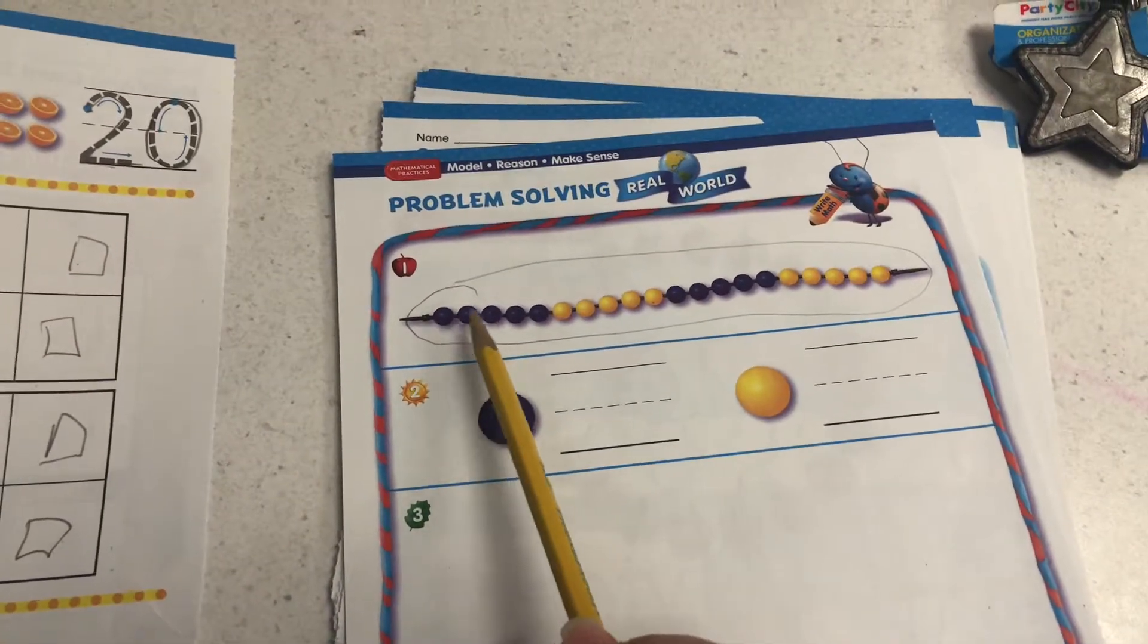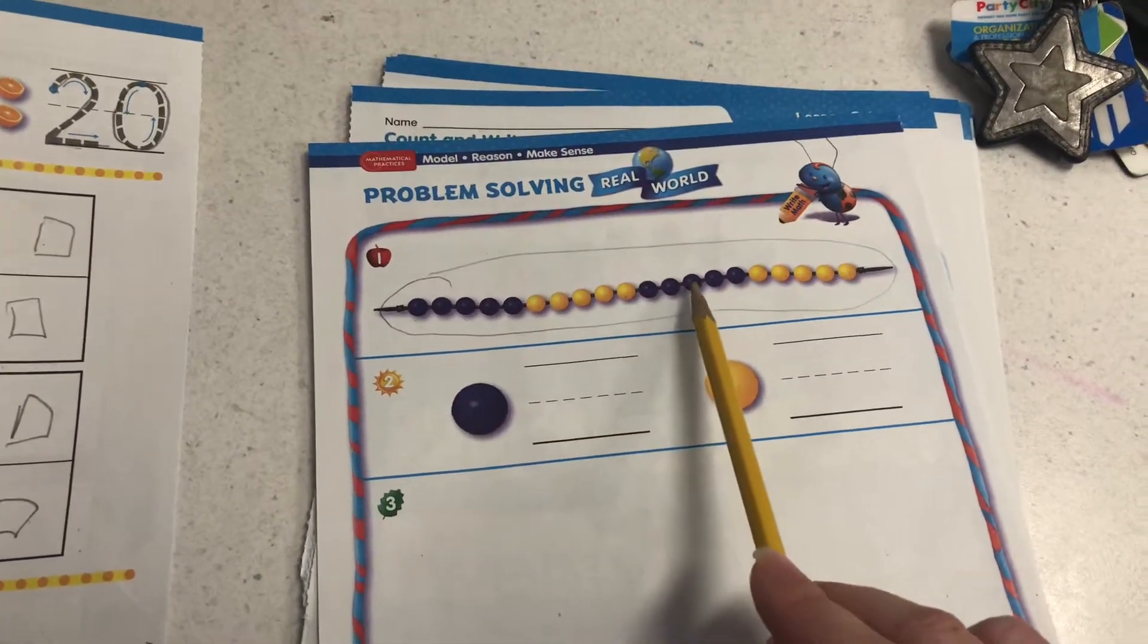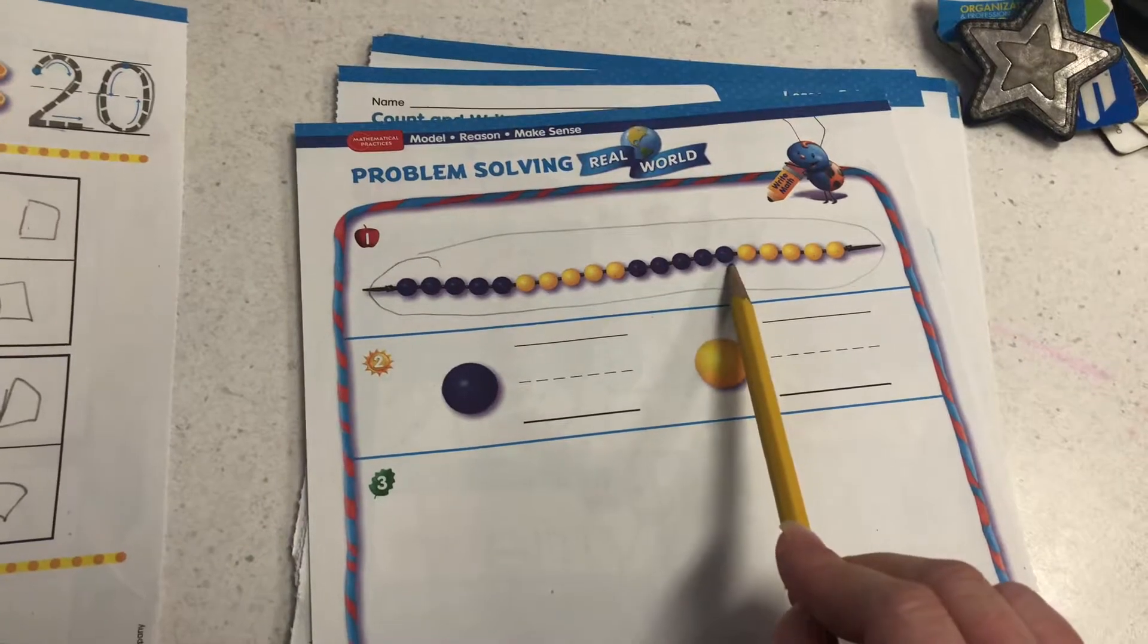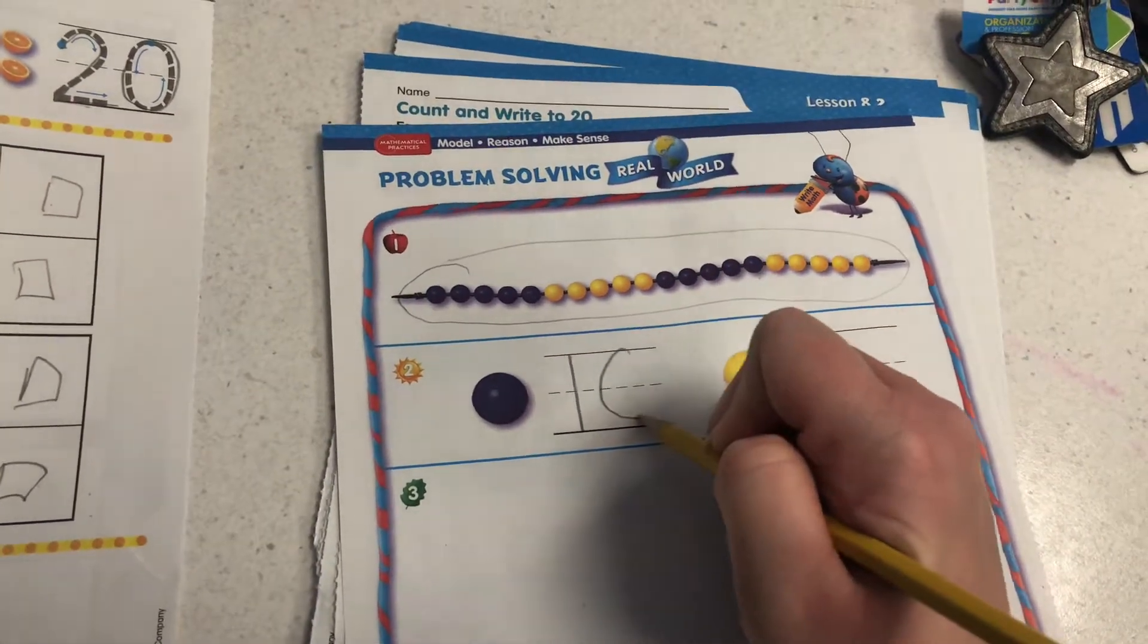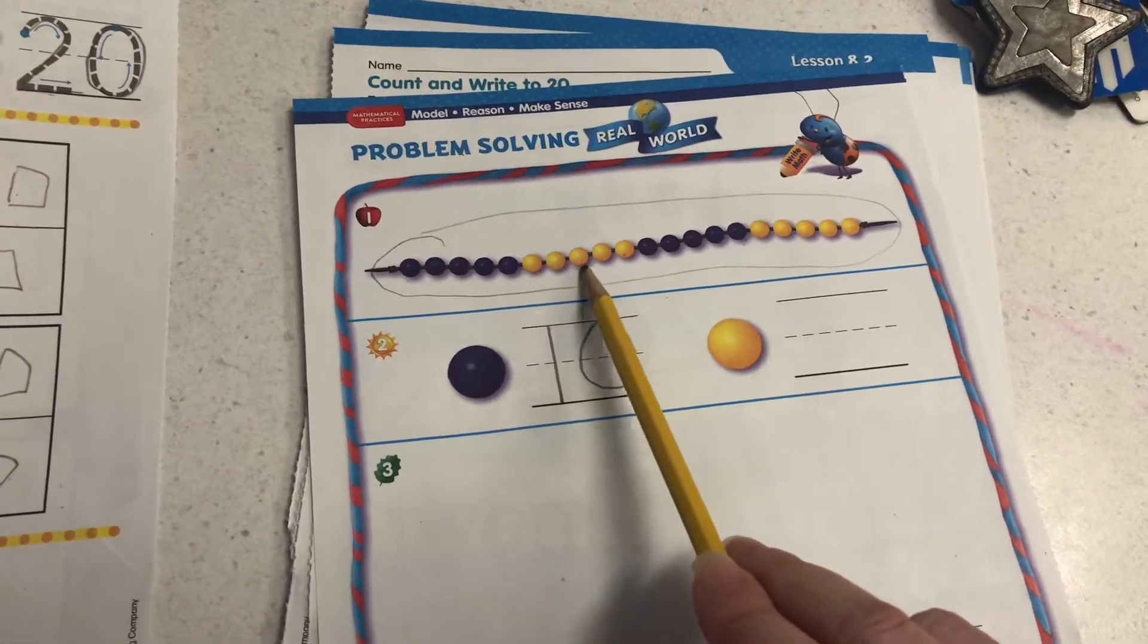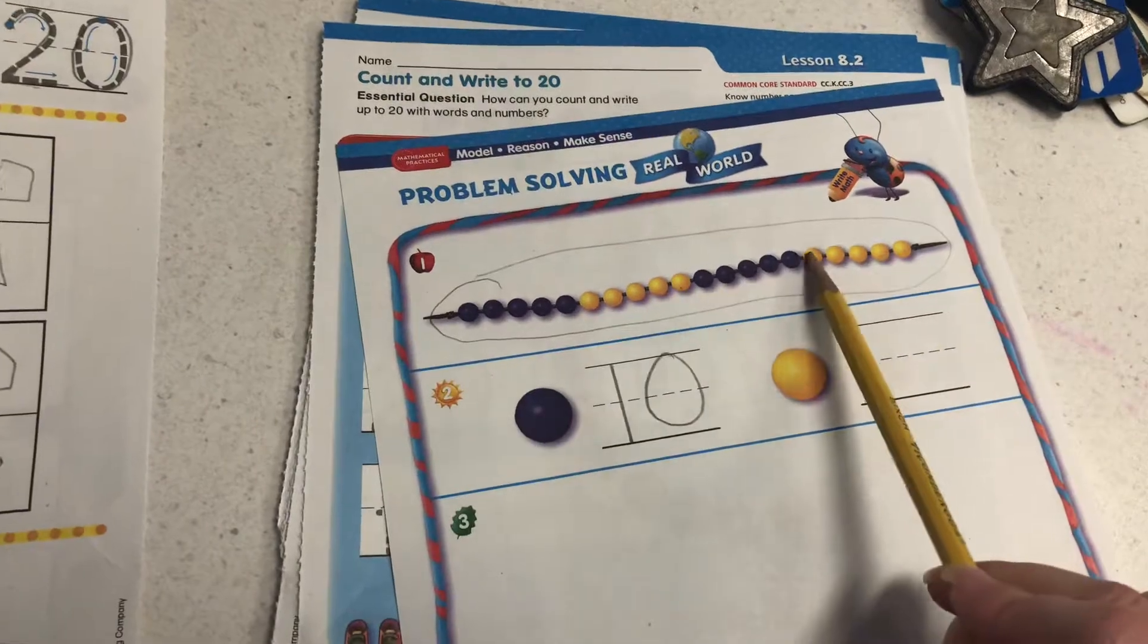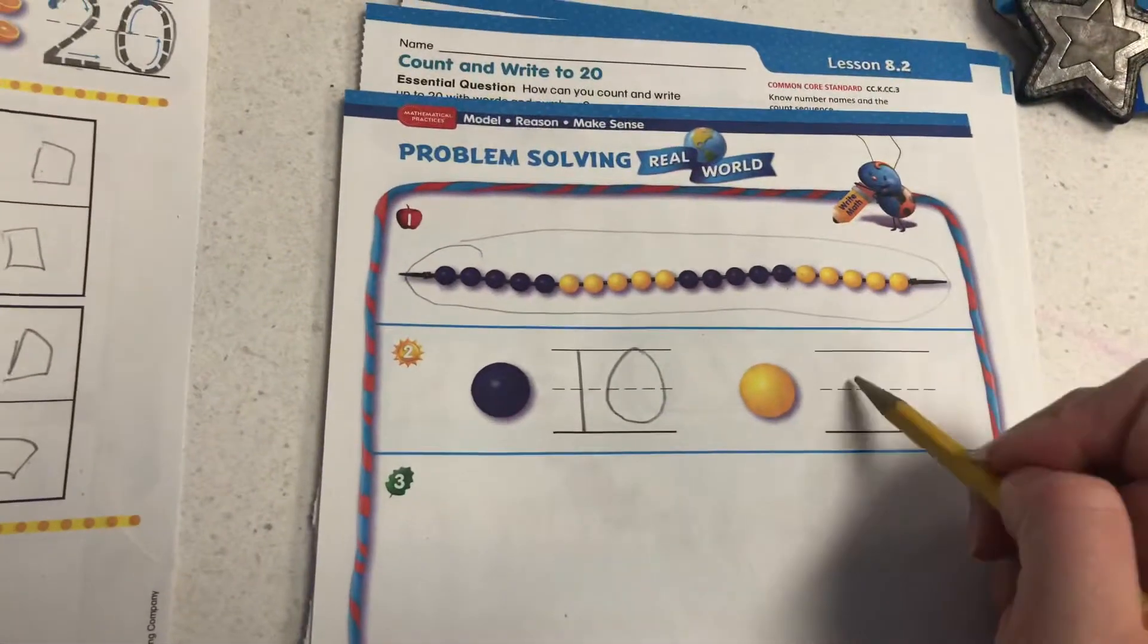One, two, three, four, five, six, seven, eight, nine, and 10. All right, here we go. And let's check out the yellow. One, two, three, four, five, six, seven, eight, nine, and 10. Nice.